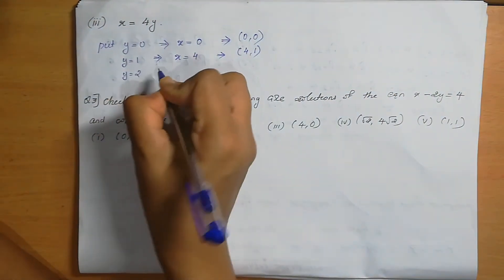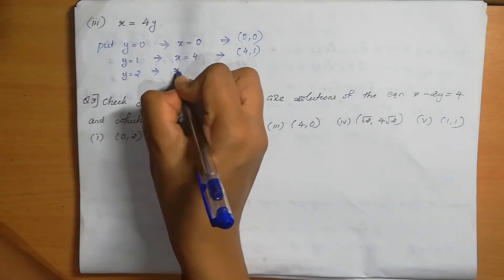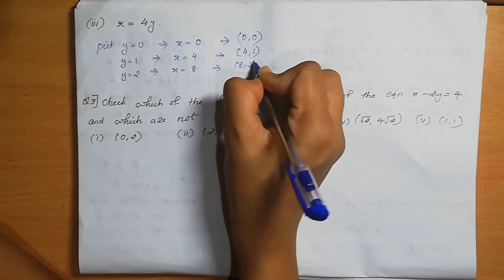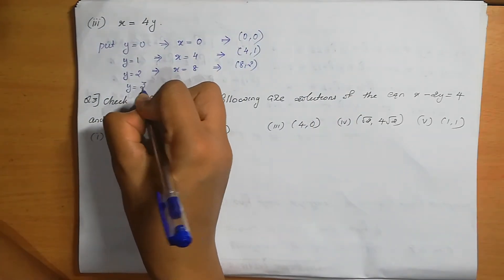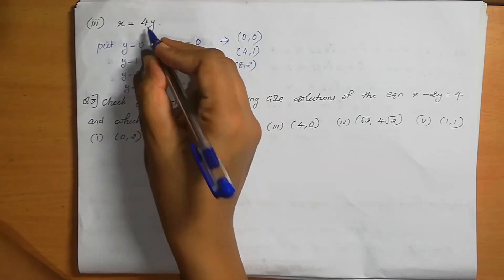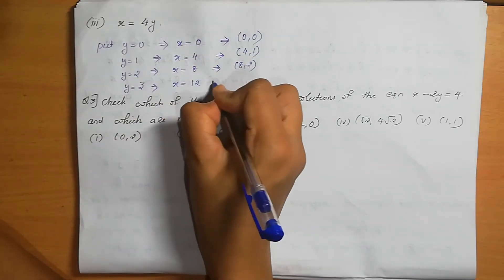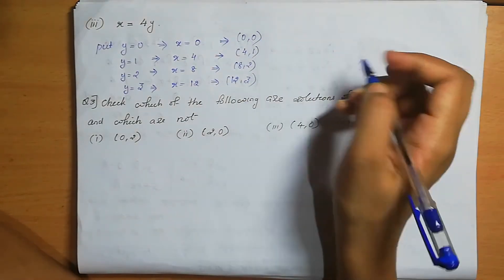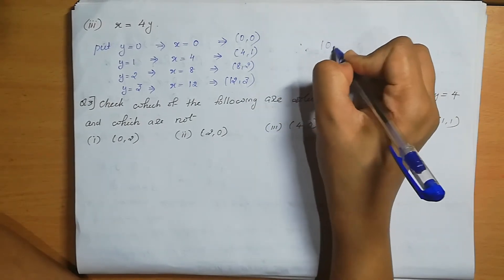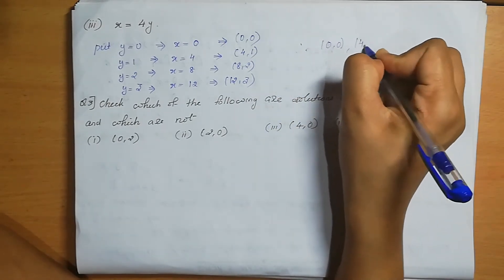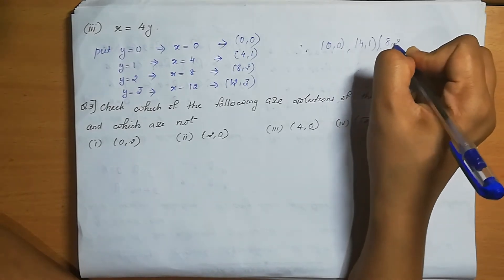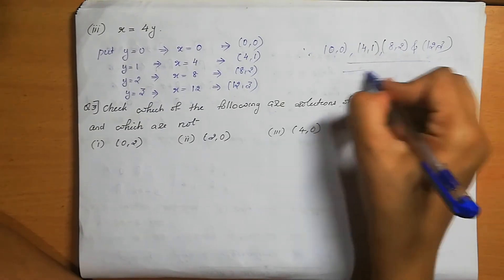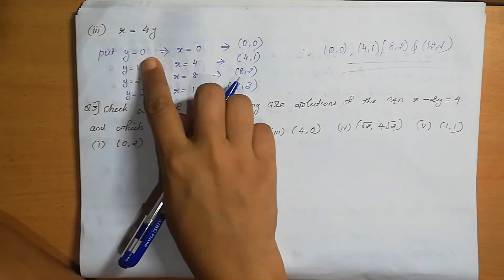Put y=2: x = 4×2 = 8. The solution is (8, 2). Put y=3: x = 4×3 = 12. The solution is (12, 3). Therefore, (0, 0), (4, 1), (8, 2), and (12, 3) are the solutions of the equation x = 4y.